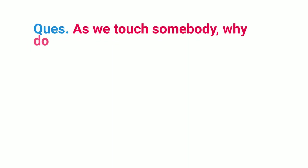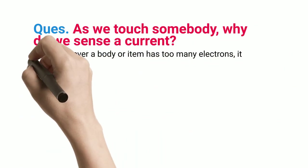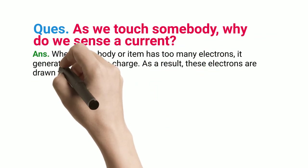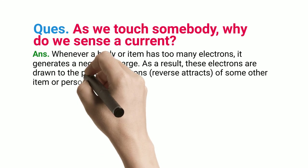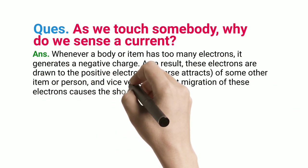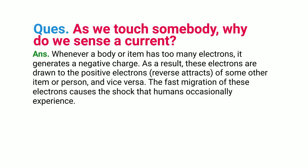Q: As we touch somebody, why do we sense a current? ANS: Whenever a body or item has too many electrons, it generates a negative charge. As a result, these electrons are drawn to the positive charges of some other item or person, and vice versa. The fast migration of these electrons causes the shock that humans occasionally experience.